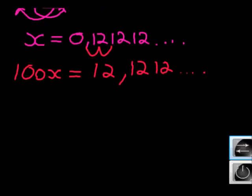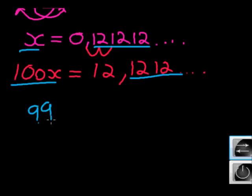So what I want to do is I want to get x on its own again. And I do that by eliminating this recurring decimal. So I'm going to subtract. So I'm going to say 100x minus x, which gives me 99x.